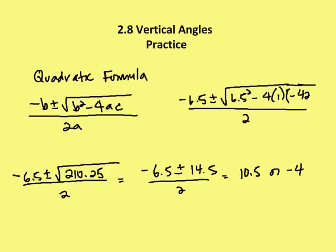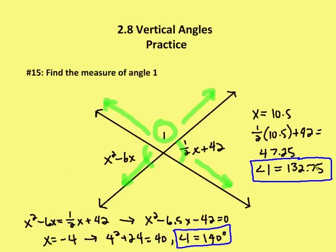Using the quadratic formula, I enter: negative b, where b is negative 6.5, plus or minus the square root of 6.5 squared minus 4 times a, which is 1, times c, which is negative 42, all over 2a. I end up with negative 6.5 plus or minus the square root of 210.25, over 2. The square root of 210.25 is 14.5, so I'm left with negative 6.5 plus or minus 14.5 over 2. That leaves me two values for x: 10.5 and negative 4. This hasn't answered the question yet — I've just found the values of x. I now need to find the value of angle one by plugging each x-value into the angle expressions and then finding the supplementary angle.